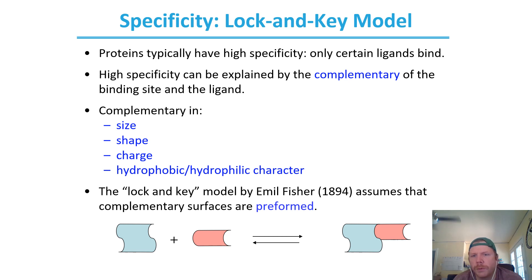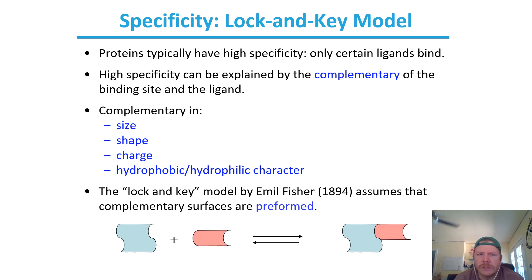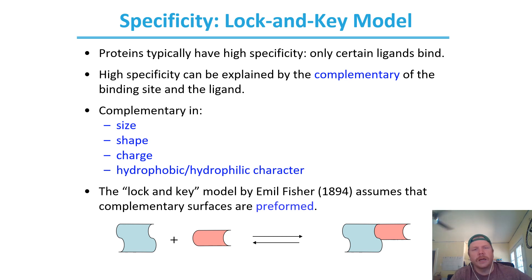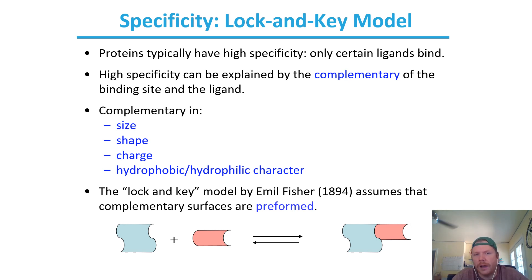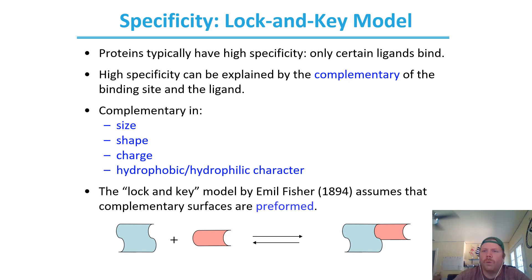Emil Fischer proposed the lock-and-key model in the early 1900s. What he proposed was that the substrate or ligand is the key and the enzyme is the lock. You have complementary surfaces that are preformed, and that substrate is only going to fit in one spot on that enzyme.